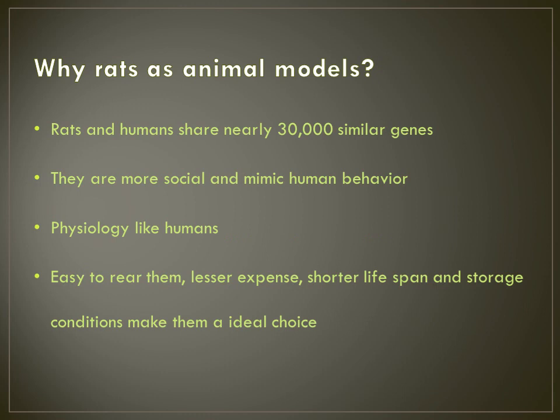Why are rats used as animal models? Rats and humans share nearly 30,000 similar genes. They are more social and mimic human behavior, and their physiology resembles that of humans. They are easy to rear, less expensive, have a shorter lifespan, and their storage conditions make them an ideal choice.